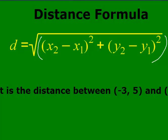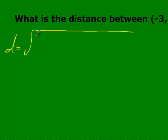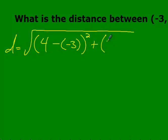So let's take a look. What is the distance between negative 3, 5 and 4, negative 1? This is just like what we did with the slope formula — x₁, y₁, x₂, y₂. All you're doing is plugging in. So x₂ is 4, x₁ is negative 3, y₂ is negative 1, and y₁ is 5.